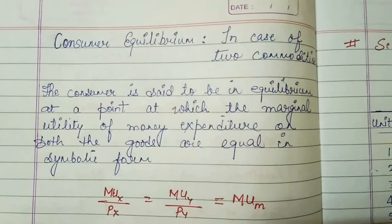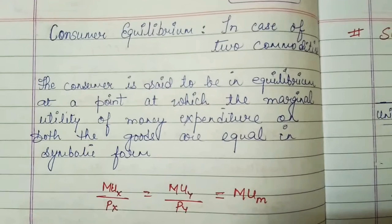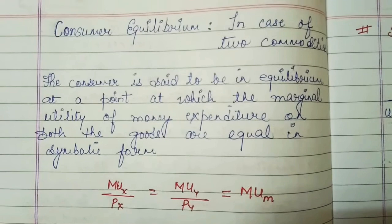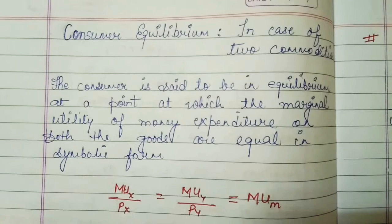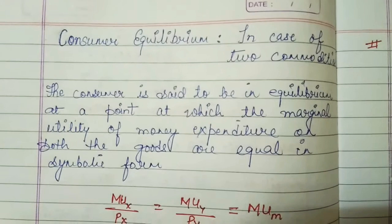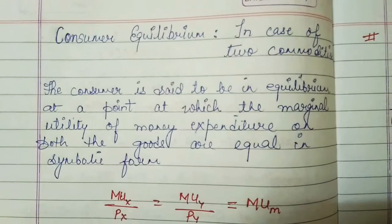Before I begin, I would like to revise the concept of consumer equilibrium. A consumer is in equilibrium when he spends his given income and plans his expenditure on different goods and services in such a manner that he maximizes total satisfaction. As I told you in my last video lecture, a consumer is said to be in equilibrium when he spends his given income across different goods and maximizes total satisfaction.